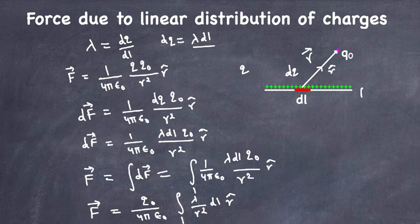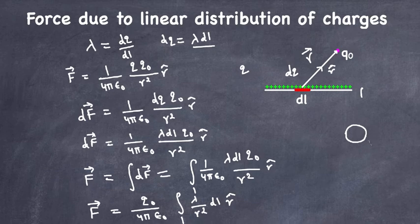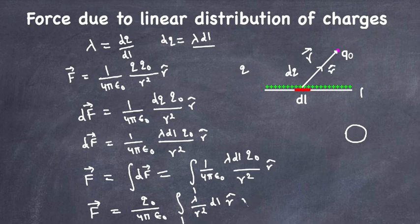You can use the same formula for a circular ring with linear charge distribution. The only things you need to know are the length, the linear charge density λ, and the distance r between the test charge and the linear charge distribution.